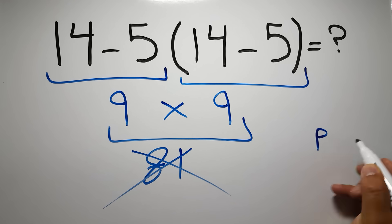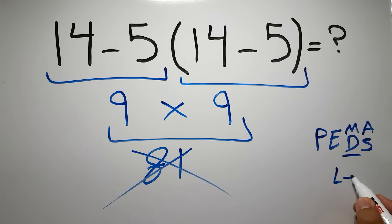Then exponents, then multiplication or division, and finally addition or subtraction. Remember that multiplication and division have equal priority and we have to work from left to right, and the same applies to addition and subtraction.